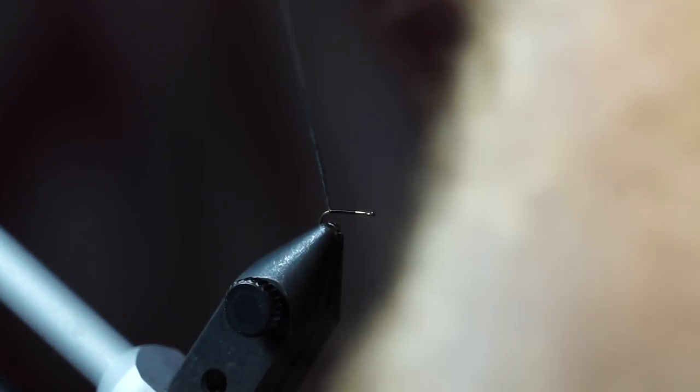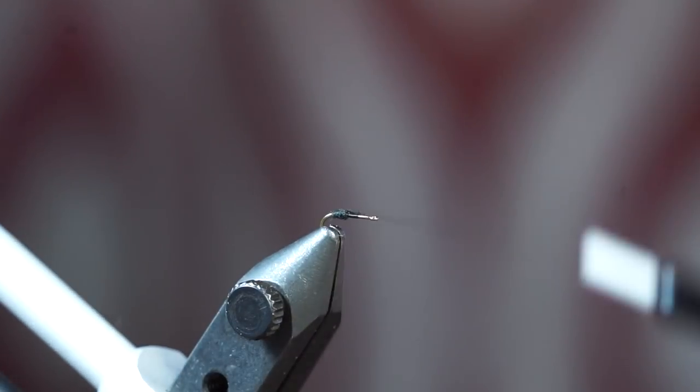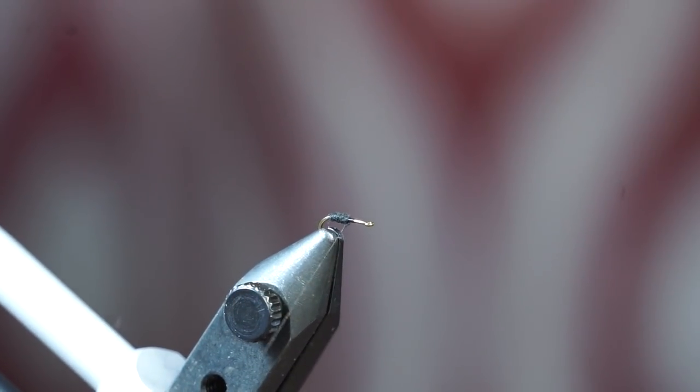Now, wrap your dubbing up the hook shank, ensuring to give it a bit of a taper. Sometimes you might need to add more like I did here.